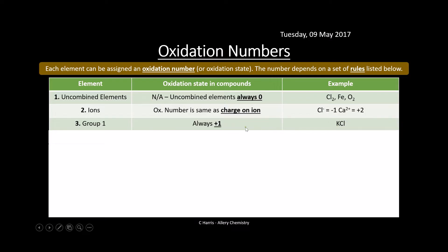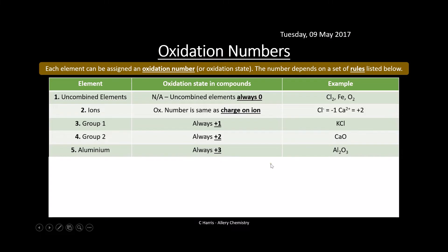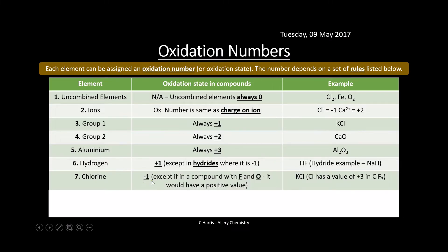Group 2 elements have an oxidation state of +2 — calcium is in Group 2 so it is +2. Aluminium is always +3, for example in aluminium oxide. Hydrogen is +1 except in hydrides where it is −1 — it is +1 in HF, but in a hydride where a metal is bonded to hydrogen, hydrogen is −1 and sodium takes +1 because Group 1 is always +1. Chlorine is always −1 except in compounds with fluorine or oxygen, where it holds a positive value — for example it is −1 in KCl but +3 in ClF₃ because fluorine is more electronegative.